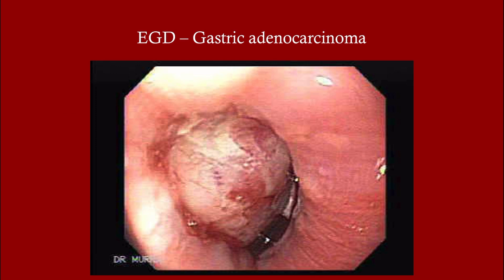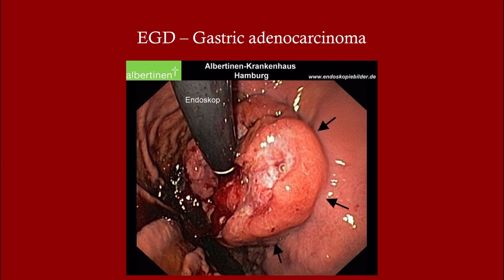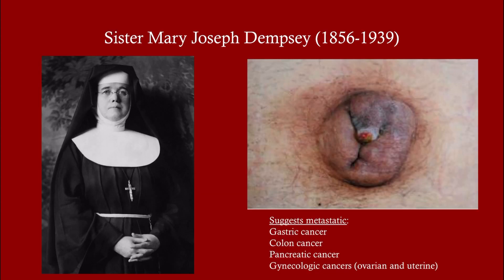This is what a gastric adenocarcinoma looks like — it's a little bit bigger than a polyp, but you can't go just based on size alone. Sister Mary Joseph Dempsey was a nurse at the Mayo Clinic in Rochester, Minnesota. What she found was an umbilical-like mass that occurs in patients with certain cancers: gastric cancer, colon cancer, pancreatic cancer, and certain gynecologic cancers.